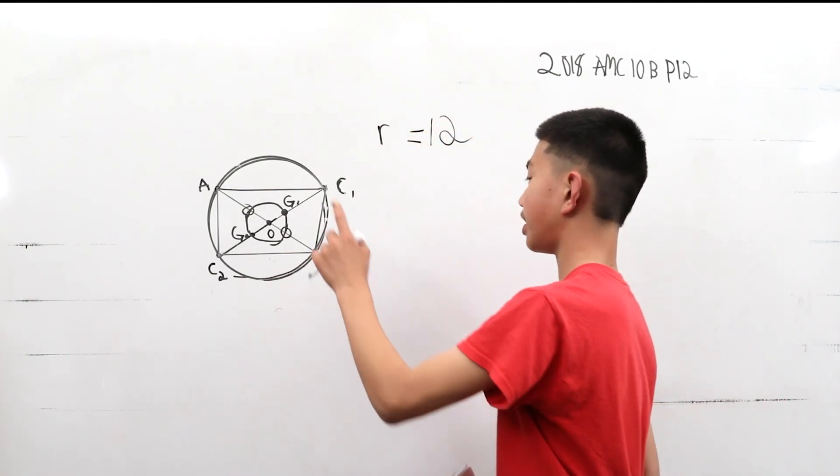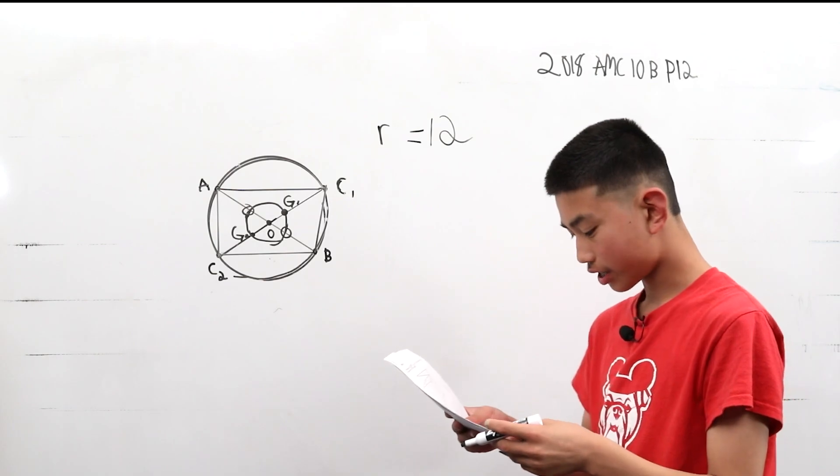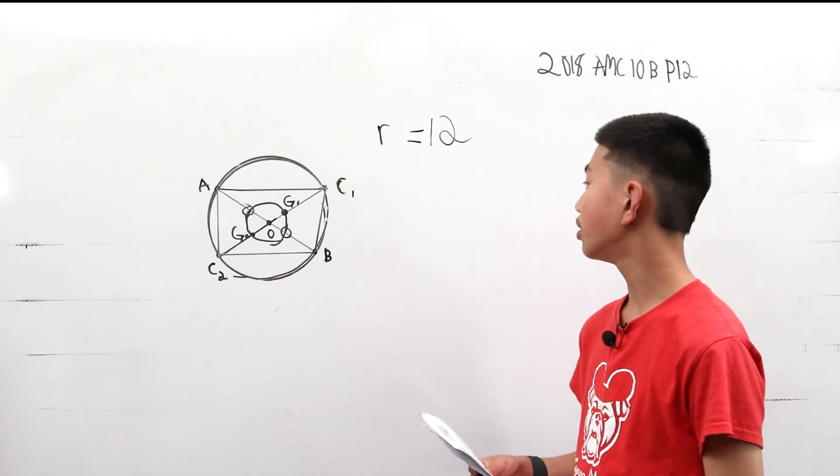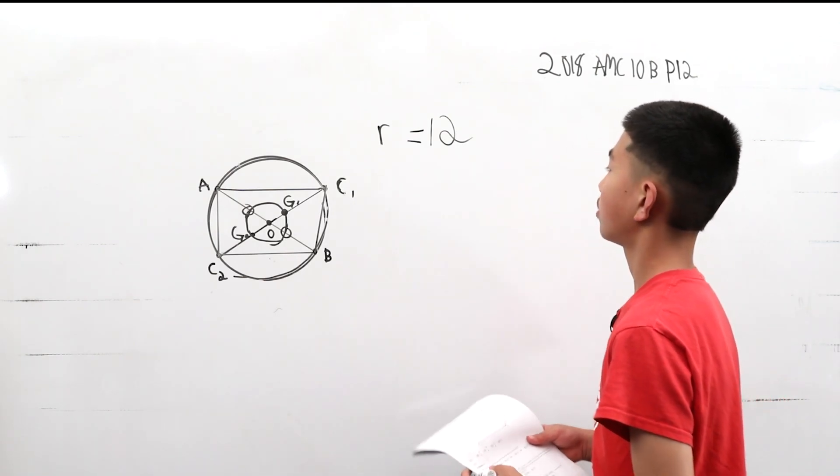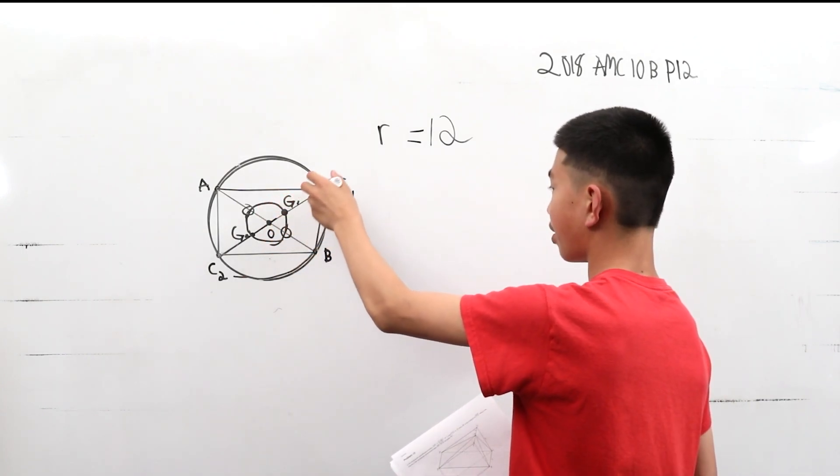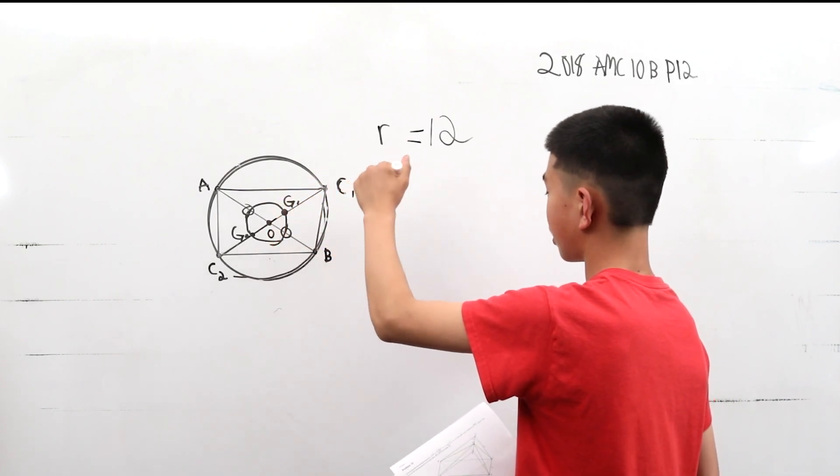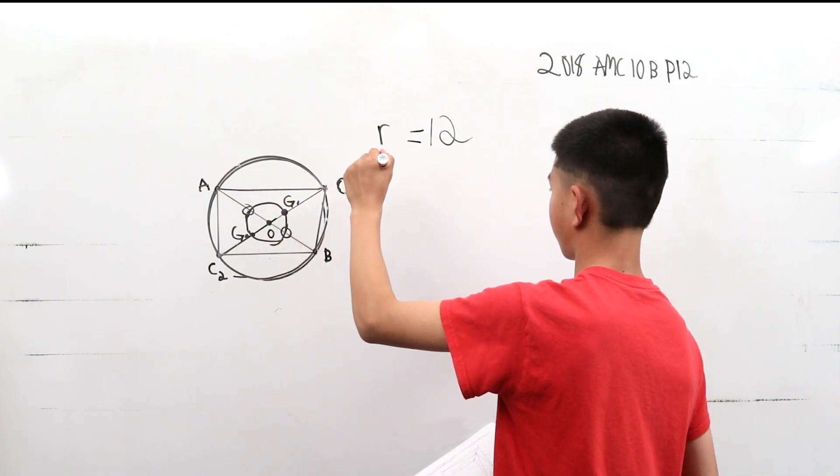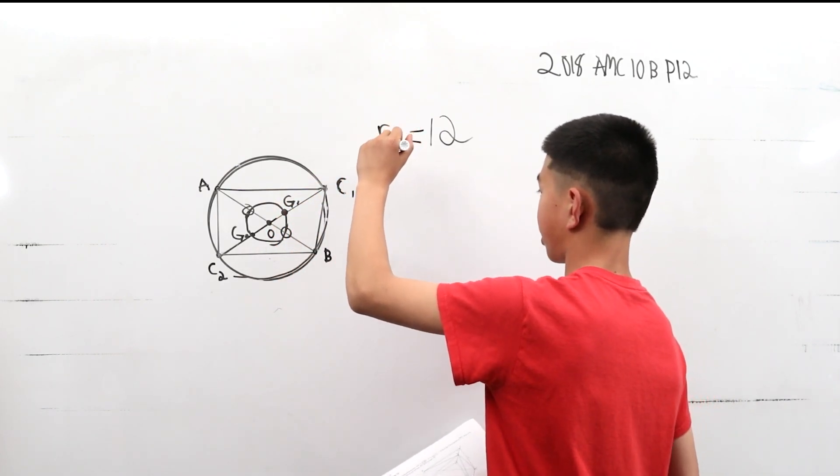Now, we have this inner circle right here. What we can realize is that since this measurement is one third of this radius, then that means this is just the radius over 3.